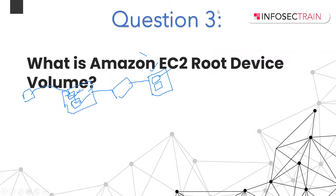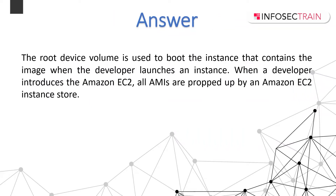The next question is: what is Amazon EC2 root device volume? When you launch an instance, the root device volume contains the image used to boot the instance. Originally, all AMIs were backed by Amazon EC2 instance store, meaning the root device was an instance store volume created from a template stored in Amazon S3. After Amazon EBS was introduced, AMIs backed by EBS were introduced, where the root device is an EBS volume created from an EBS snapshot. It is recommended to use Amazon EBS as it launches faster and uses persistent storage.